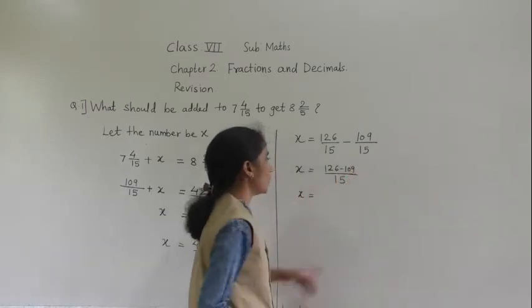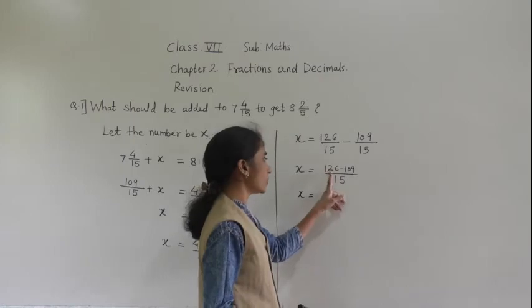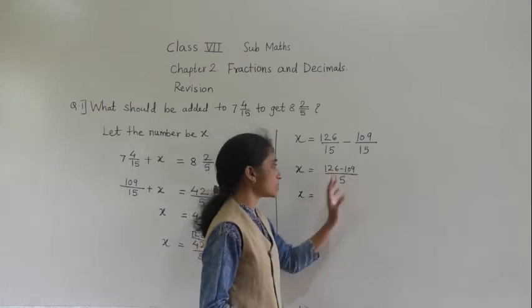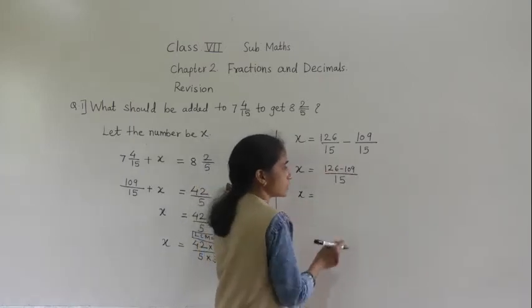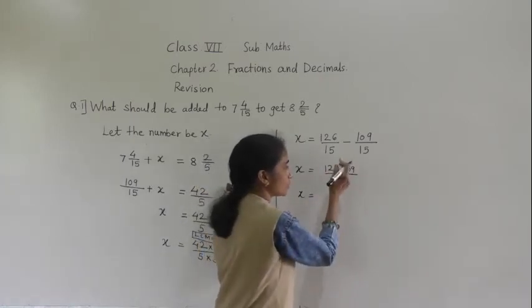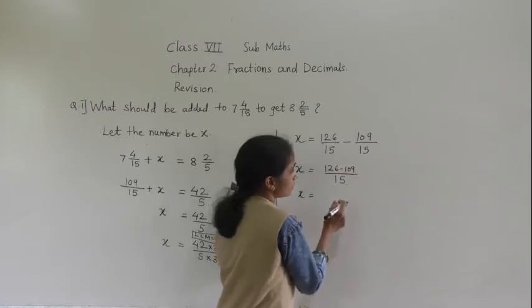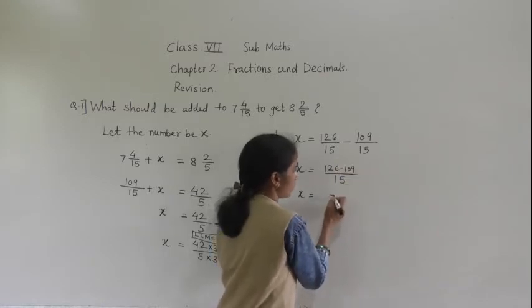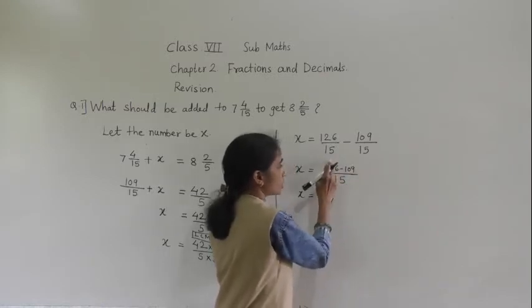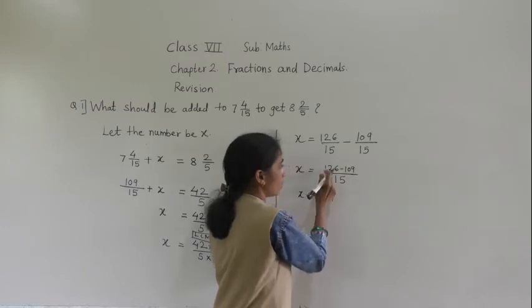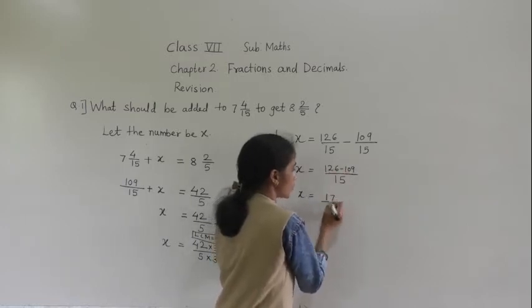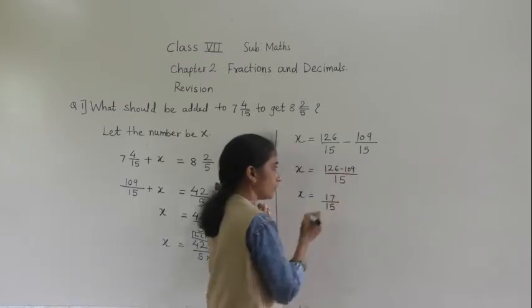x is equal to 126 minus 109. 6 minus 9 is not possible, so take a borrow: 16 minus 9 is 7, 1 minus 0 is 1, 1 minus 1 is 0. So we get 17 upon 15.